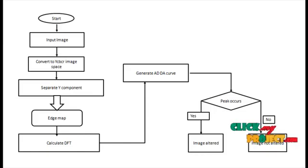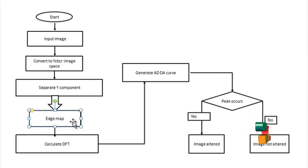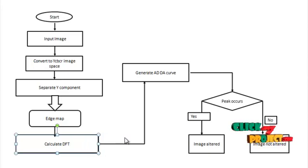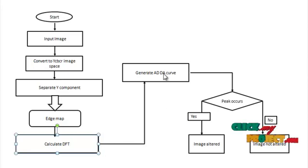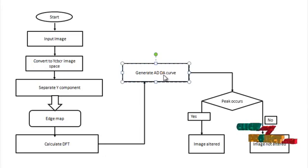We separate the yellow color component from the given image, then calculate the edge map. After that, we calculate the DFT — Discrete Fourier Transform. Then we draw the AD and DA curves. For the AD curve, we calculate the average and then perform DFT on the given images. For the DA curve, we calculate DFT and then take the average from the edge map of the images.